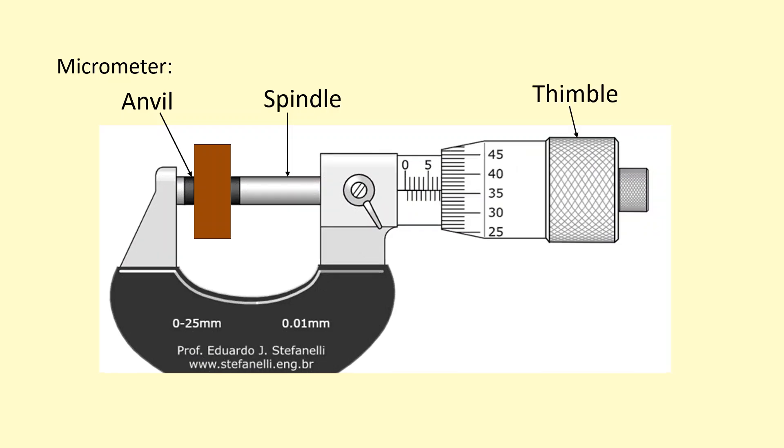Turn the thimble until it closes on the object. Don't turn it too far because you don't want to squeeze the object. Once you feel a bit of pressure, switch to the ratchet which applies a smaller amount of pressure as you turn it. The ratchet makes a clicking sound, at which point you stop.